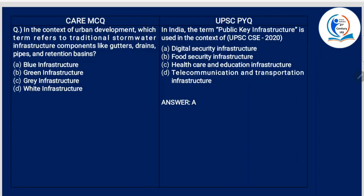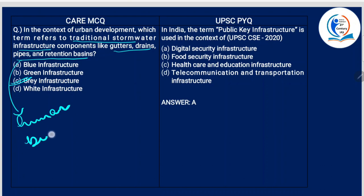Let us look into the MCQ. In the context of urban development, which term refers to traditional stormwater infrastructure components like gutters, drains, pipes and retention basins? It is grey infrastructure. These are human-built structures, so any infrastructure falling under this category — traditional stormwater infrastructure: gutters, drains, pipes and retention basins — that is grey infrastructure.